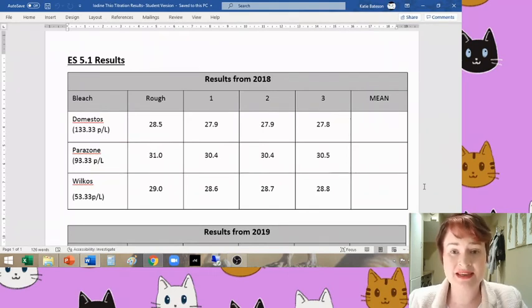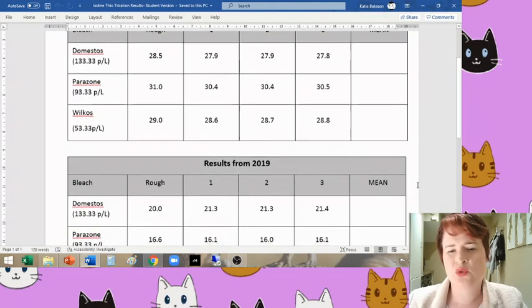What you need to do is have a go at calculating the titer for each one and therefore the concentration of the bleach molecules within each of the different samples. If you fancy an extra challenge, or if you are aiming for A's or A-stars, I would strongly advise also having a look at the results from 2019.